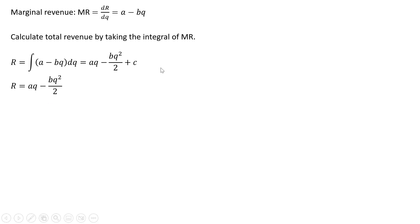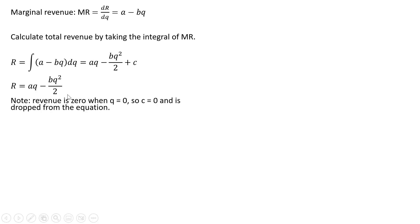We're going to simplify this by dropping the c, so revenue will just equal this. Why did we drop the c? Revenue is zero when q equals zero, therefore c will equal zero, and it's dropped from the equation.